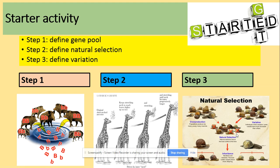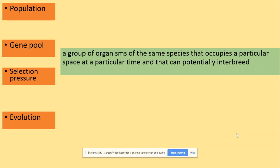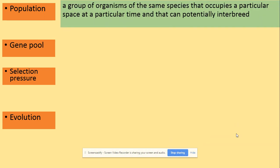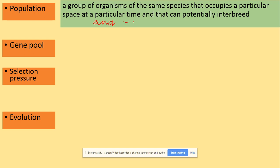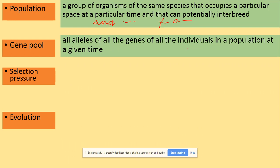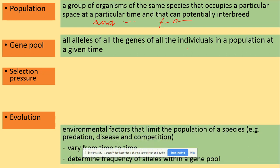Variation in the phenotype causes natural selection, which leads to evolution. A population is a group of organisms of the same species that occupies a specific space at a specific time, that can interbreed and produce fertile offspring - you need to mention fertile offspring to get full marks.